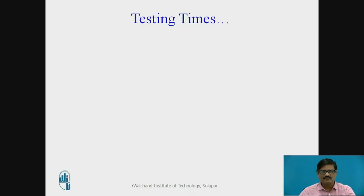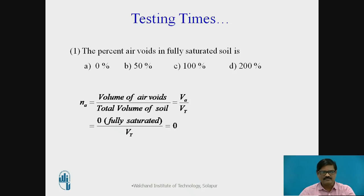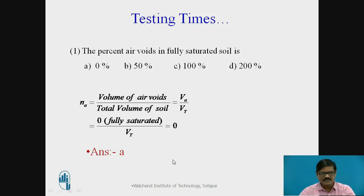I hope you got the answers to both MCQ questions. Let us discuss the answers. The first question asked is: the percent air voids in fully saturated soil is. Since it is a saturated soil, we refer the equation of percent air voids — Na is given by volume of air voids divided by total volume of soil. Since it is fully saturated, the volume of air voids will be zero. Therefore zero upon Vt gives the answer zero. The correct option is A.